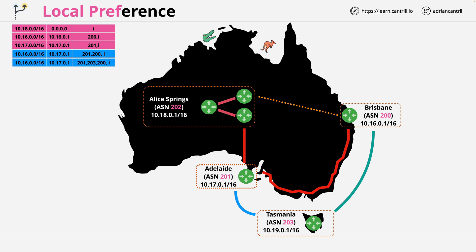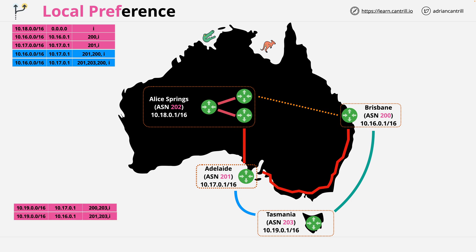Strictly speaking, Adelaide would probably only advertise its best route to Brisbane, so you'd probably only see the top blue route. We would also have a new route for Tasmania, 10.19.0.0/16, going via Adelaide, and another route for Tasmania going via Brisbane. Note how for both of these the AS path length is the same, so from BGP's perspective we have two equal length routes with the same priority. This is where local preference comes in.